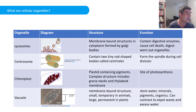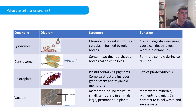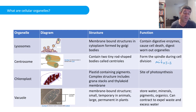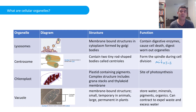Centrosomes are another important organelle, consisting of two tiny rod-shaped bodies called centrioles. These become important during mitosis, when the cell divides. The centrioles move to opposite poles and create a spindle in the middle, along which chromosomes will line up. We'll look at mitosis and meiosis later in the course, but the centrosome plays a very important role in cell division.